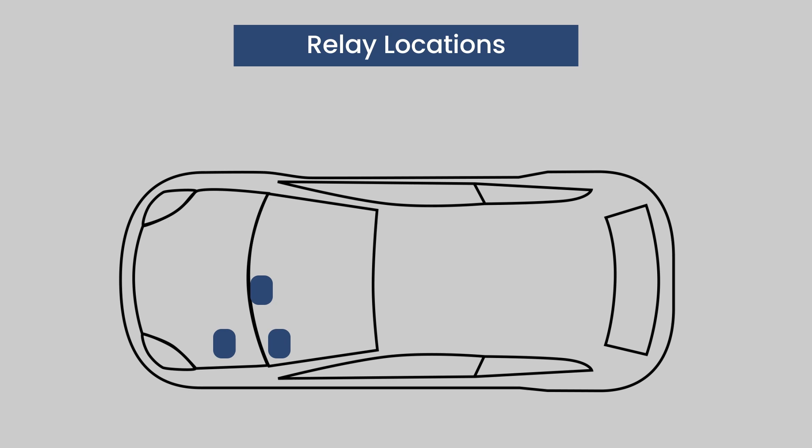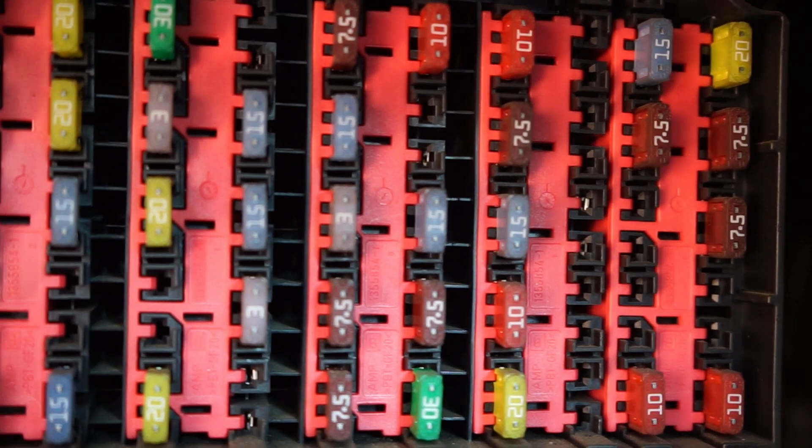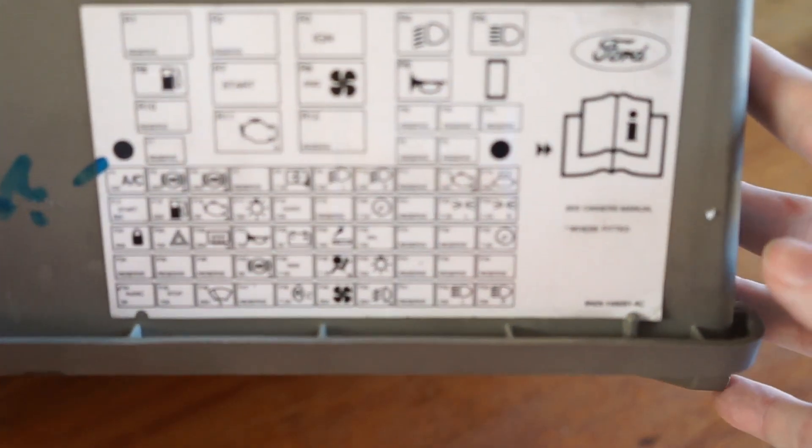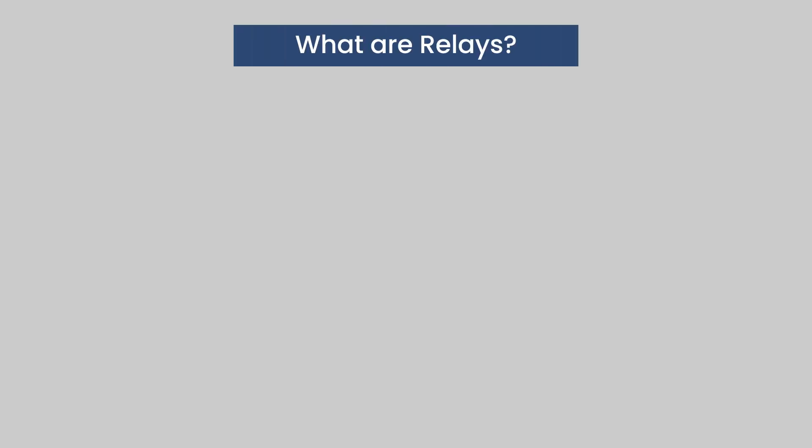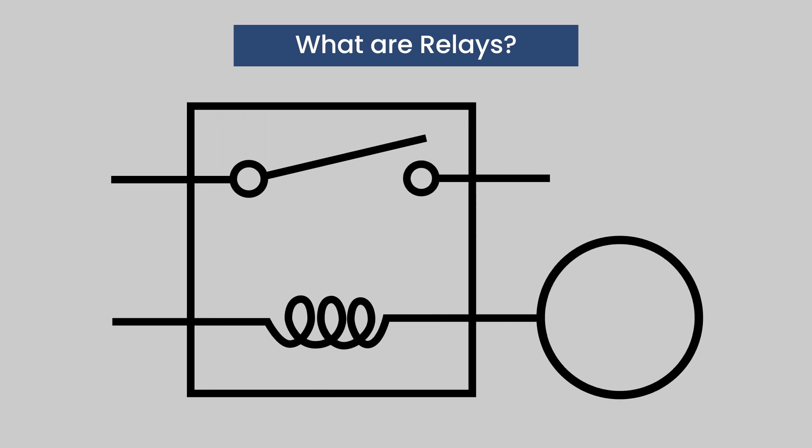They are sometimes grouped along with fuses. The covers for the fuse boxes should have a diagram that clearly labels each fuse and relay. Relays are remote controlled switches that are controlled by other switches such as the hooter or a computer like the ECU.